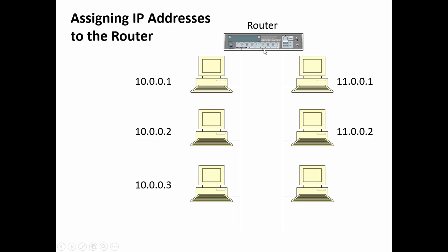Now let's make sure we assign an IP address to the router. The router has a network interface card connected to each network, so each NIC in the router has to have an IP address. The router will be 10.0.0.1, the first workstation 10.0.0.2, and the second 10.0.0.3. On the other network, the router will be 11.0.0.1, and the first workstation 11.0.0.2. The router doesn't have to be .1, but we usually do that by convention.